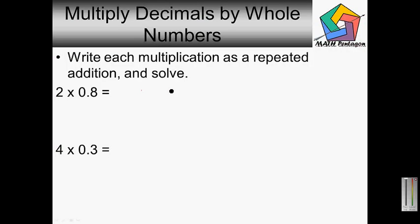Multiply decimals by whole numbers. We want to write each multiplication as a repeated addition and solve. We have 2 times 0.8.